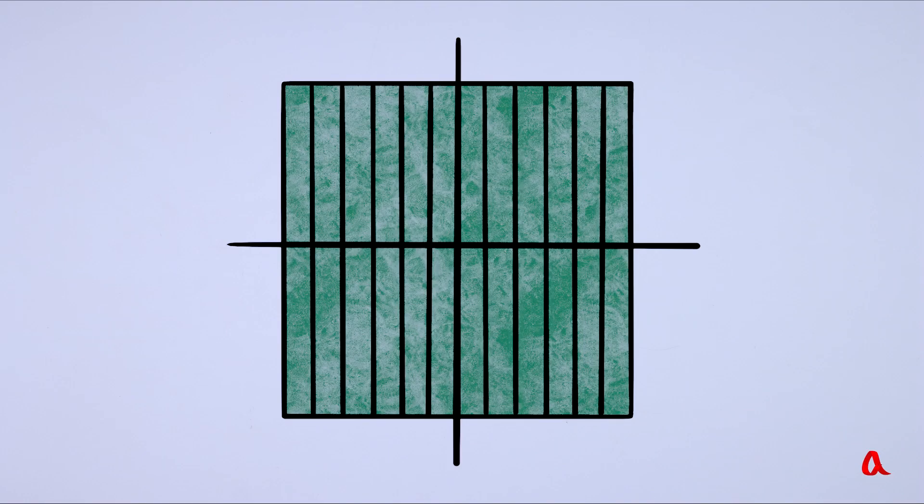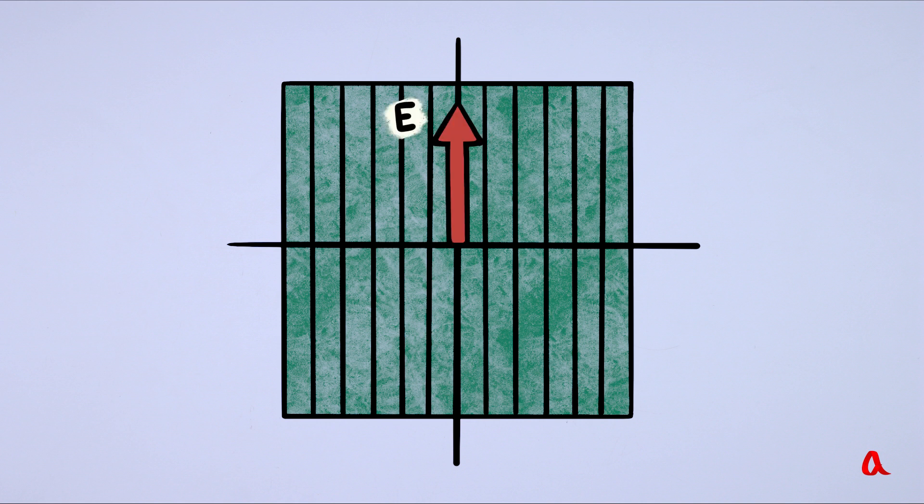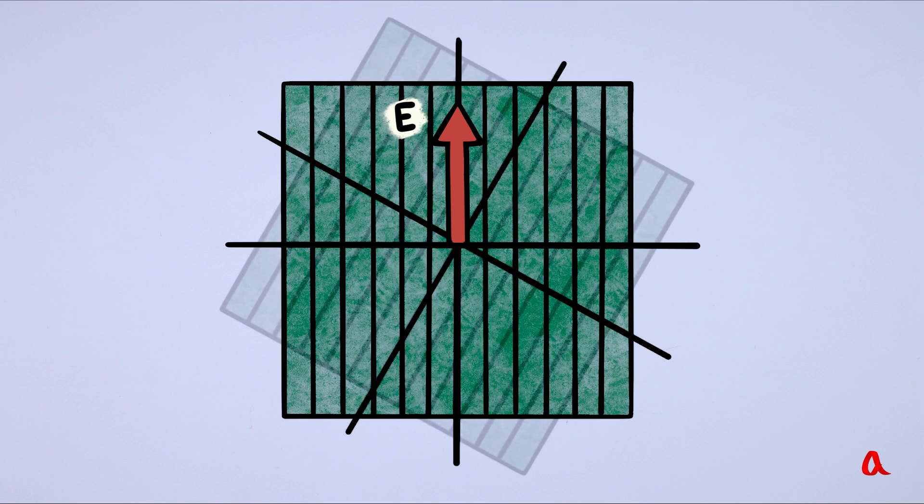The first film in our experiment is called a polarizer. The polarizer lets through the light whose electric field is oriented along the selected direction. Let's put another film in the way of this light, turning it at an angle alpha relative to the first film.